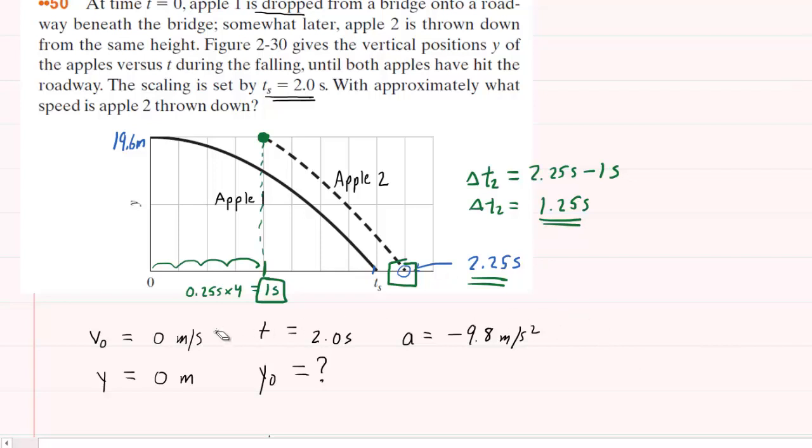So why don't we now list all of the quantities that we know or wish to know for Apple II. We'll clear out all these and see what we can fill in. We'll leave the acceleration there, of course, because Apple II is also in free fall, so it has the same acceleration of negative 9.8. We just figured out the time interval for Apple II. It's 1.25 seconds.